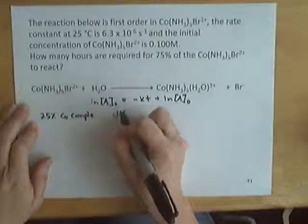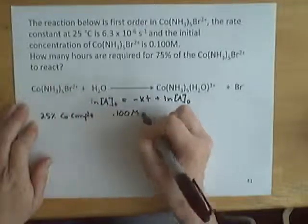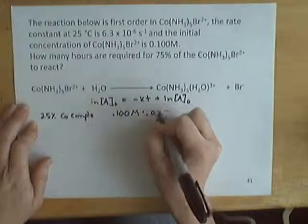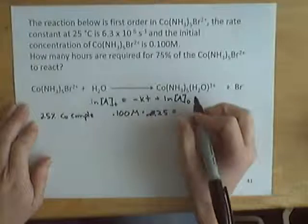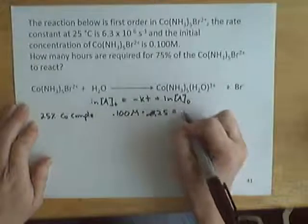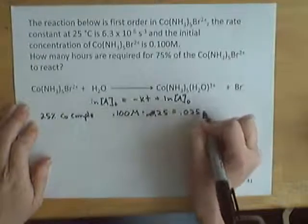If we start with an initial concentration of 0.1 molar, multiply that by 0.25, and we get 0.025 molar.